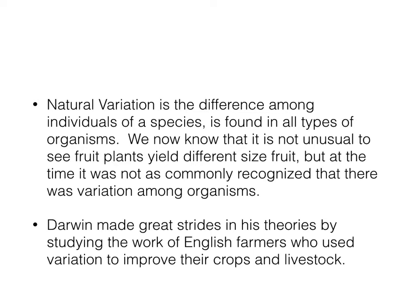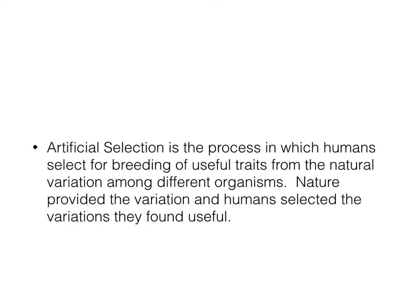These farmers noticed that there were better animals or better strains of plants or crops to use, and they used those to breed for the next generation. Artificial selection is the process in which humans artificially select for breeding traits that they find useful. Nature provides the variations, but humans select the ones they find useful and continue to perpetuate them by continually breeding.